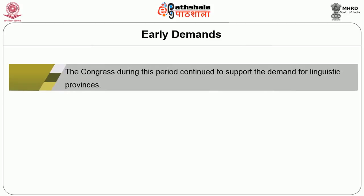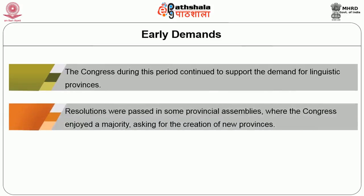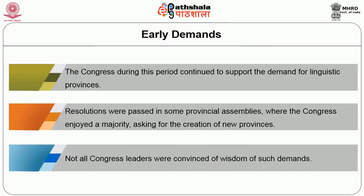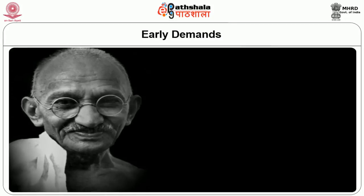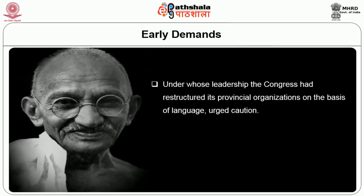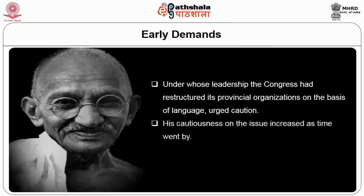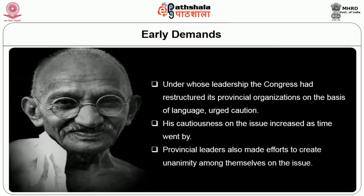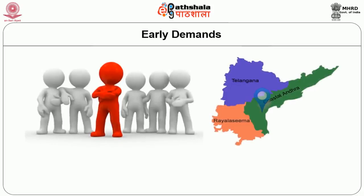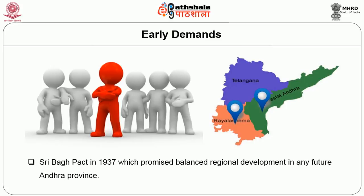One of the first concrete moves toward using language as a basis for redrawing provincial boundaries came with the Government of India Act 1935, which separated Sindh from the Bombay Presidency and Orissa to form separate provinces. The separation of Sindh — a Muslim-majority region in Hindu-majority Bombay — had more to do with communal considerations, though language was a factor. The formation of Orissa was however primarily driven by linguistic considerations. The Congress continued to support the demand for linguistic provinces, though not all Congress leaders were convinced, and even Gandhi urged caution.